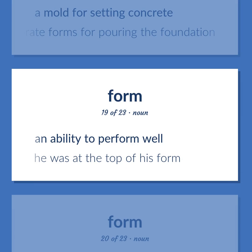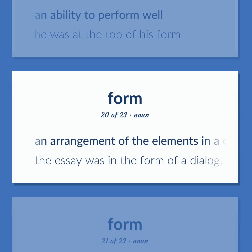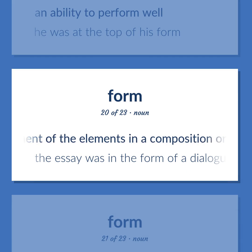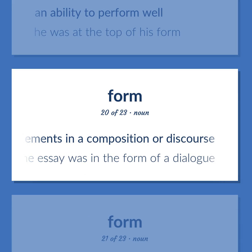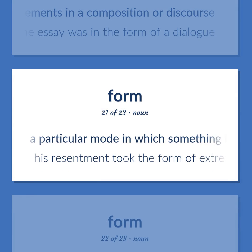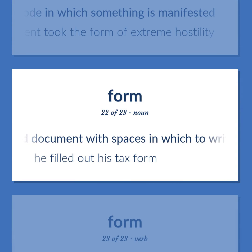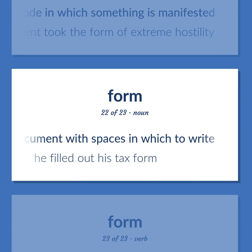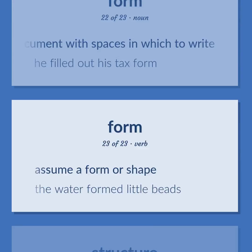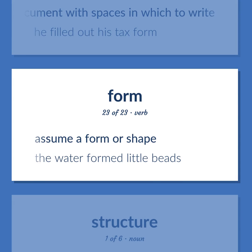Form (continued): An ability to perform well. Example: He was at the top of his form. An arrangement of the elements in a composition or discourse. Example: The essay was in the form of a dialogue. A particular mode in which something is manifested. Example: His resentment took the form of extreme hostility. A printed document with spaces in which to write. Example: He filled out his tax form. Assume a form or shape. Example: The water formed little beads.